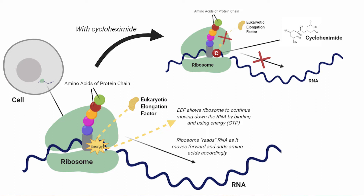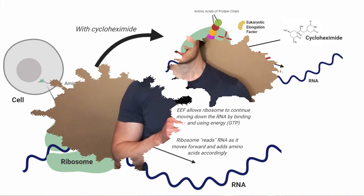However, cycloheximide binds the ribosome in such a way that it blocks this elongation factor from accessing the ribosome, thereby blocking the ribosome from continuing its synthesis of proteins. In this way, cycloheximide stops protein synthesis. Scientists use this to our advantage, because if we stop protein synthesis throughout the cell, what protein has already been produced is all that is left. Proteins are no longer being produced and are only being degraded, because the degradation machinery is still functioning, unlike the production and synthesis machinery.